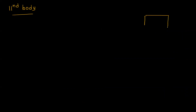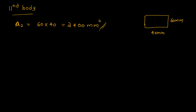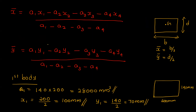The second body rectangle has dimensions: 40 mm and 60 mm. A2 is the area of this rectangle.